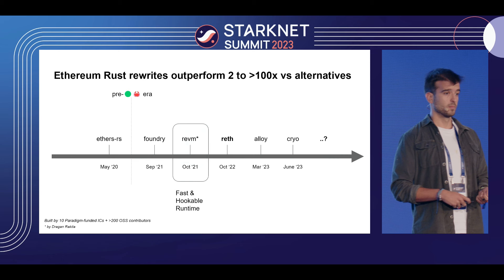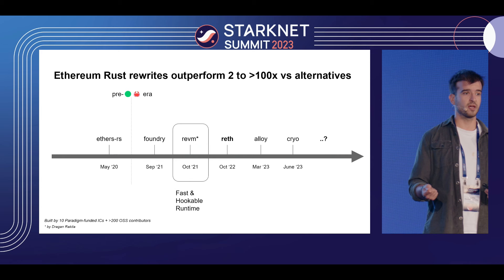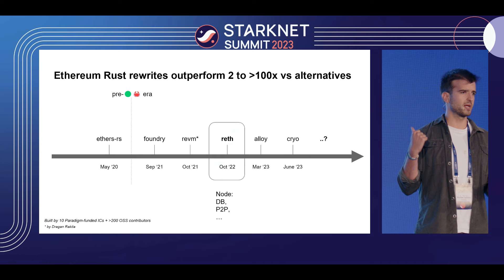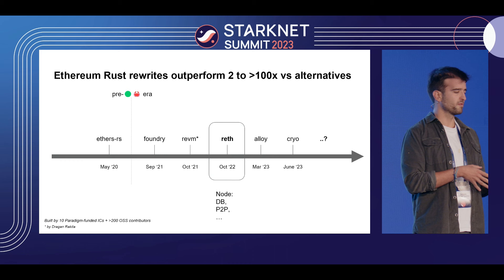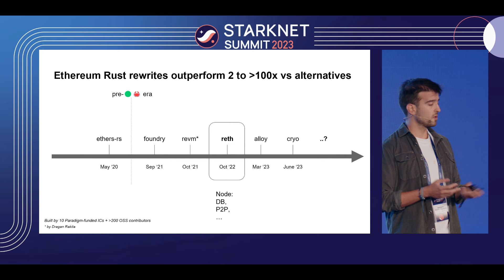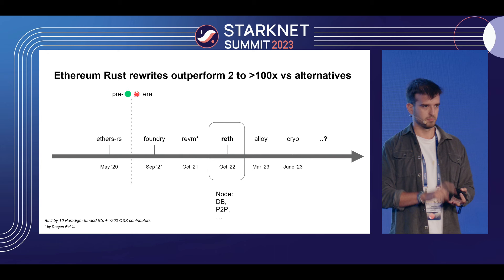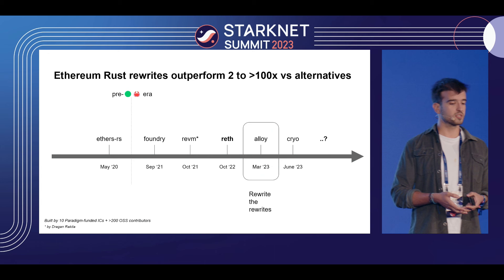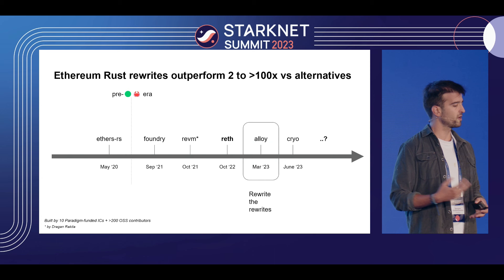We built Foundry, a testing framework for testing Solidity in Solidity, which was very fast and outperformed others by 3x, 10x, 100x — the highest benchmark was 341x. We got into testing and thought there was a lot of room to get even better. Then while iterating on Foundry, we thought: what if we have a fast and hookable runtime EVM? We wanted to make it faster for testing, and also hookable so that as transactions operate, you can customize the functionality.